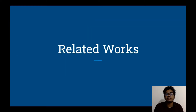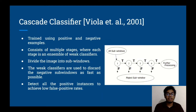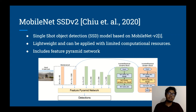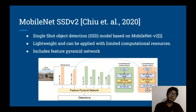Let's talk about some related works that inspired us. First, the Cascade Classifier is a classifier trained using positive and negative examples of images. It consists of multiple stages where each stage is an ensemble of weak classifiers, used to discard negative examples as fast as possible to achieve low false positive rates. Secondly, the MobileNet SSD V2 architecture is a single-shot object detection model based on the MobileNet V2 architecture — very lightweight and applicable with limited computational resources. It also includes a feature pyramid network, which improves detection accuracy.